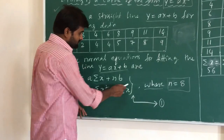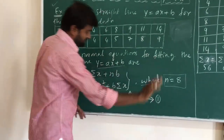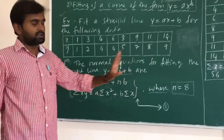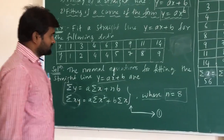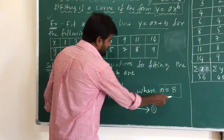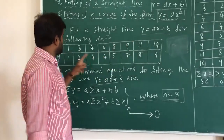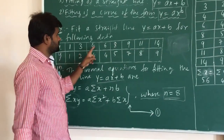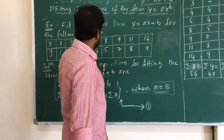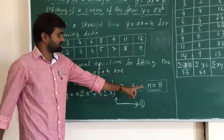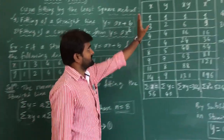Here, n is nothing but the number of data points. We have 1, 2, 3, 4, 5, 6, 7, 8 — so n equals 8. Now we proceed to form the table.